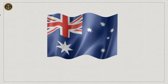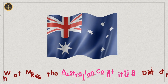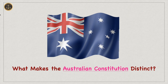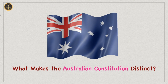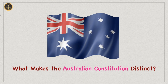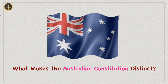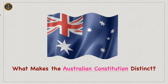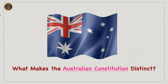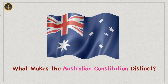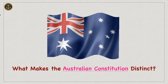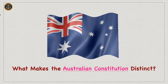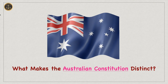Hello friends, in this video I am going to discuss what makes the Australian Constitution distinct. Like most countries, the Constitution of Australia is the supreme law that governs the whole system of Australia. The Constitution of Australia came into effect on January 1, 1901, and likewise established the Commonwealth of Australia.